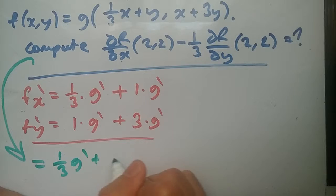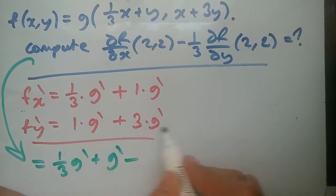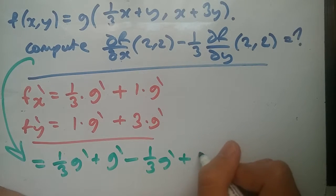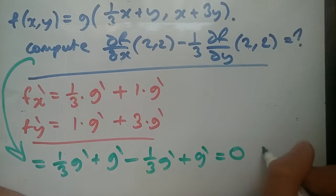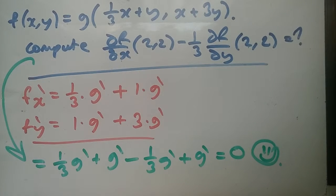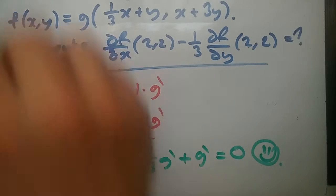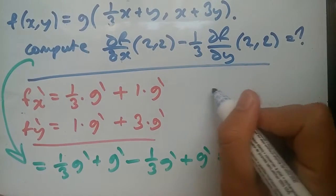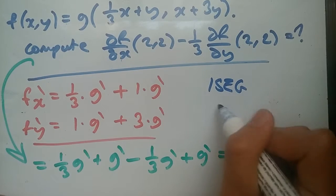Replacing this we're going to get 1/3 g prime plus g prime minus 1/3 times these set values. We're going to get 1/3 g prime plus g prime, and again you get zero. I don't know if this is intentional because it wasn't my paper. This is from one of ESEG's previous exams, an ESEG exam.